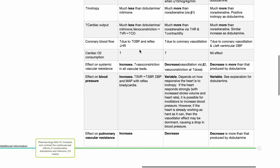Regarding effect on pulmonary vascular resistance: noradrenaline increases PVR, while dobutamine and milrinone decrease PVR.